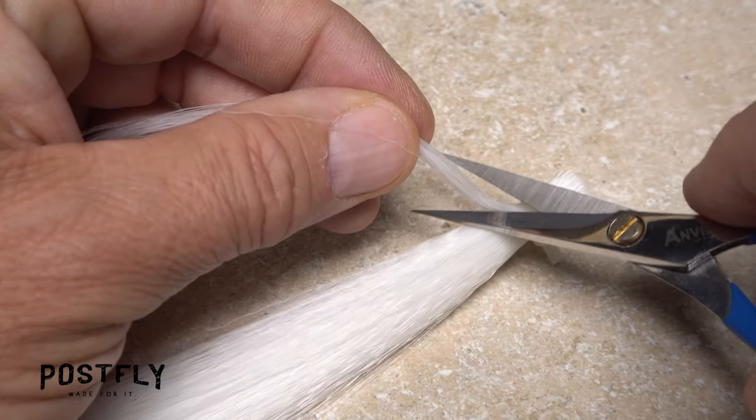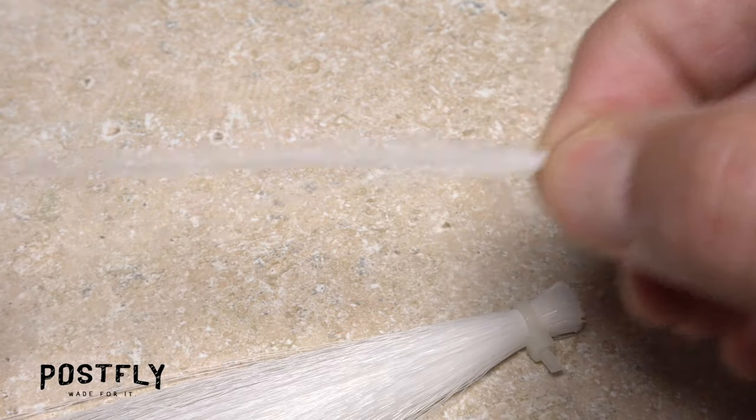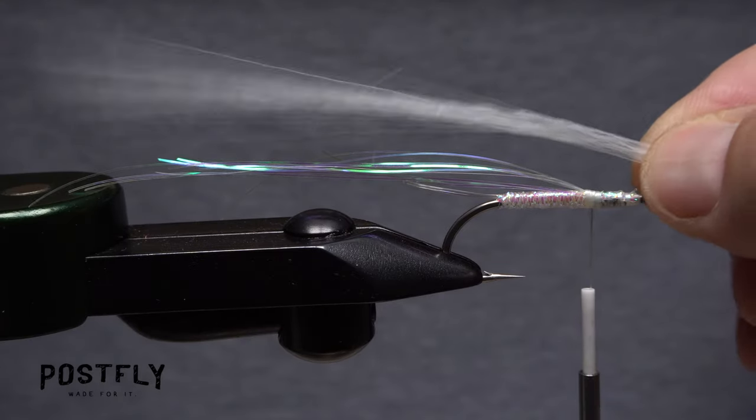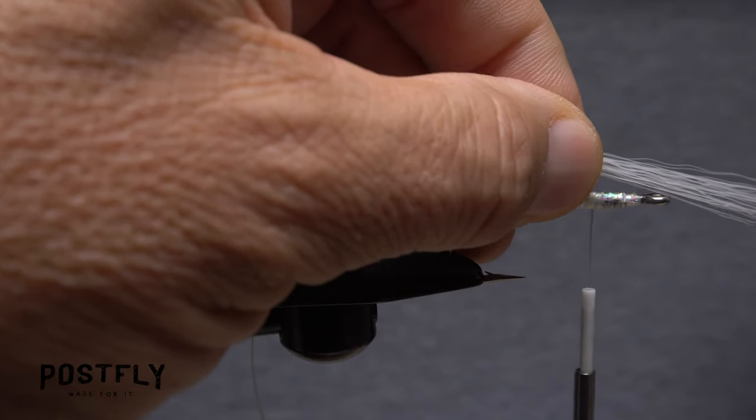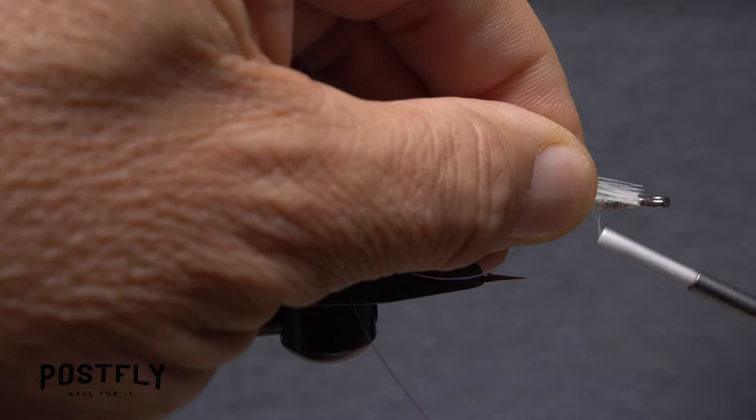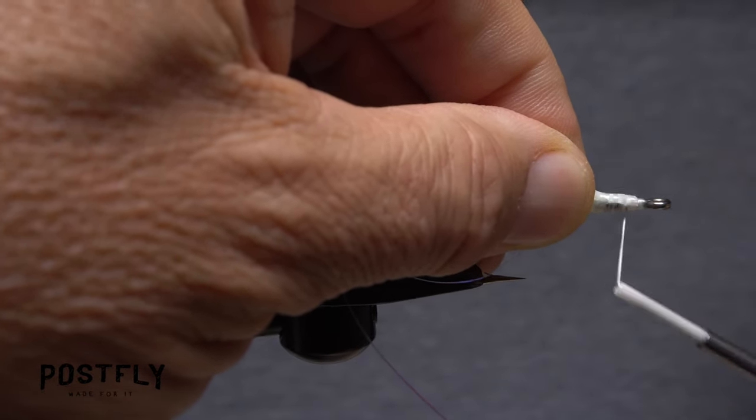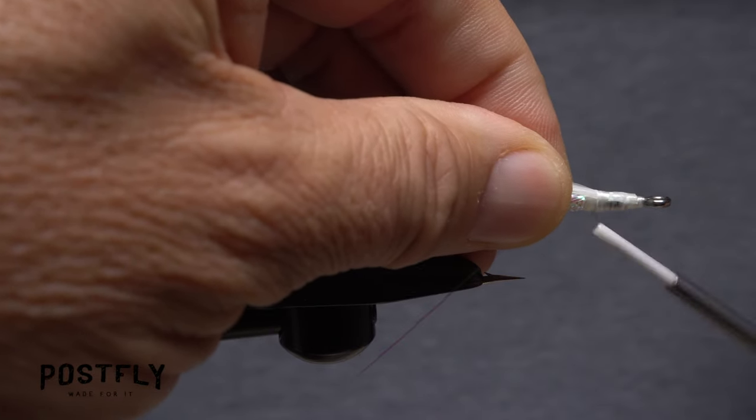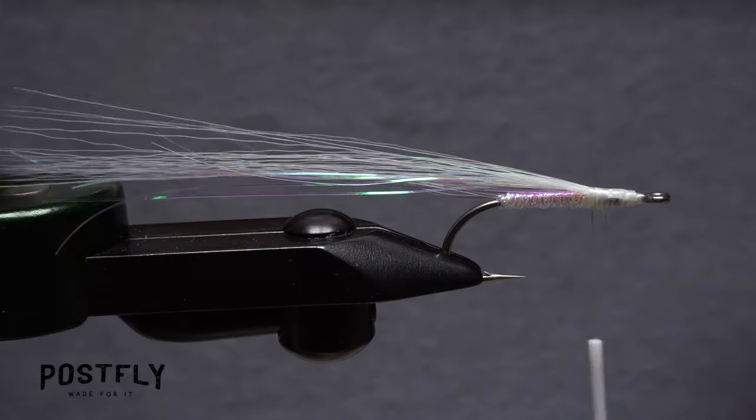Snip a small clump of white faux bucktail, about two dozen fibers, free from the hank. Hold the material so its tips extend just past the ends of the Flashaboo. While keeping this measurement, snip the butt ends off at the back edge of the hook eye, then take tight wraps of tying thread to bind them down to the top of the shank. This material is also very slippery, so make sure it's bound down well all the way back to the start of the braid body.